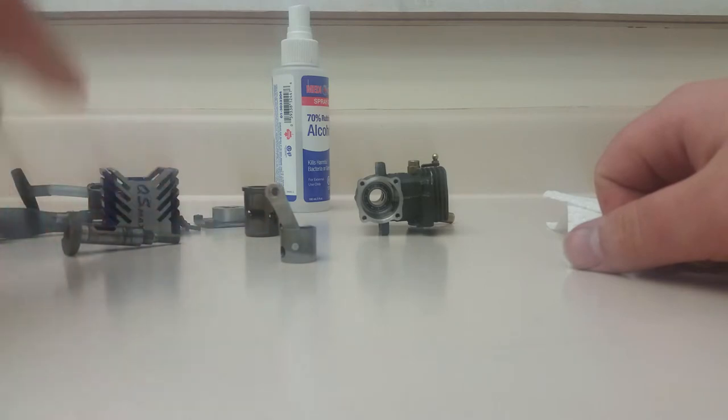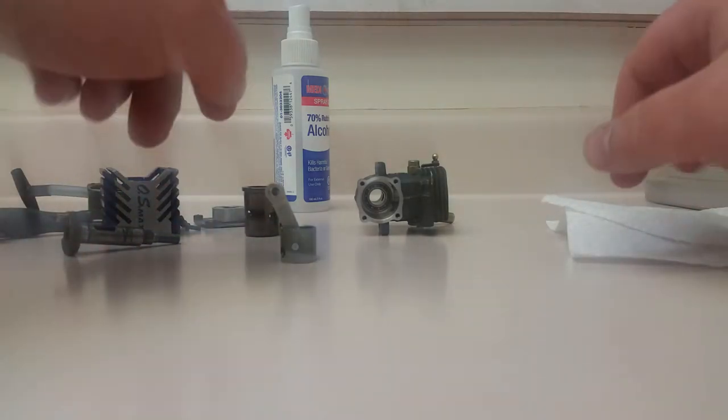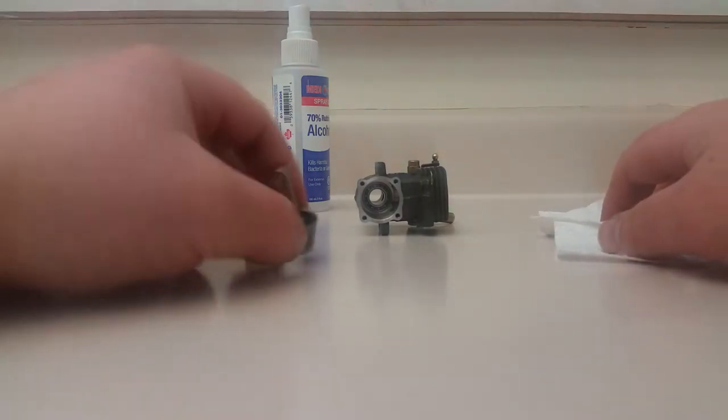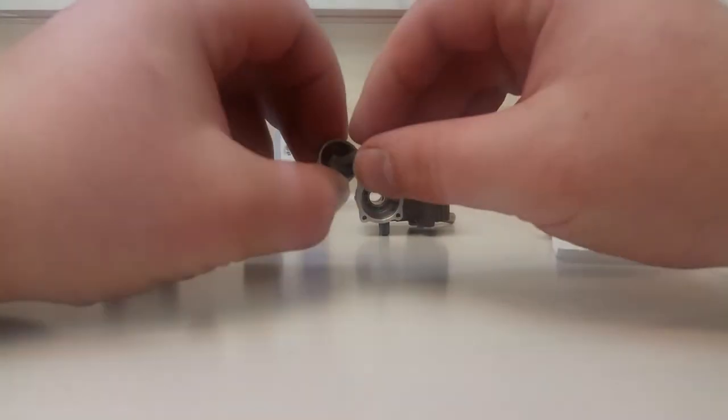Some of the other engines will use like a C-clip in there, or I guess G-clip, it's kind of a G like capital G shaped clip that holds the pin in from slapping the sides of the cylinder.